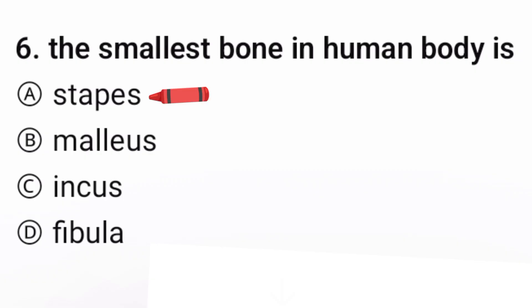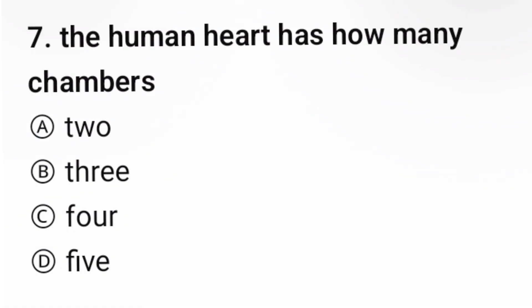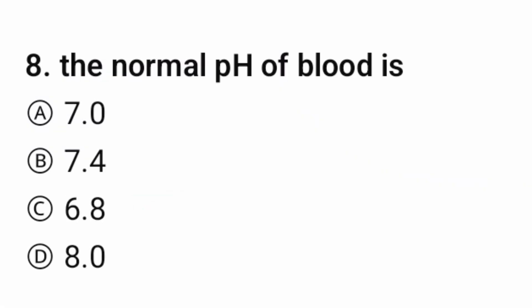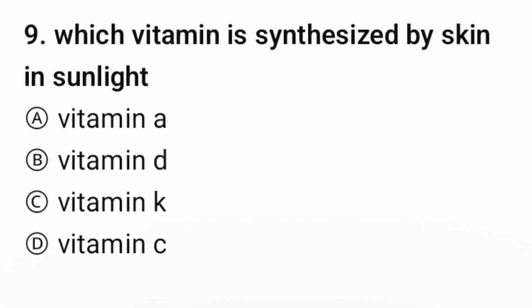The correct option is A. Question 7: The human heart has how many chambers? The correct option is C (four). Question 8: The pH of blood is — the correct option is B, seven point four.